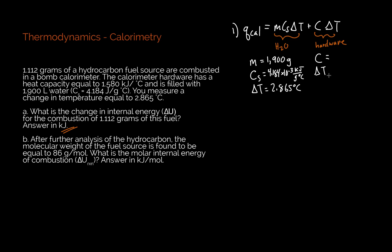For my hardware component, I'm already given my heat capacity in terms of kilojoules, so I'm just going to keep it like that: 1.580 kilojoules per degree C. And then my change in temperature, like the water, is going to be 2.865 degrees C.